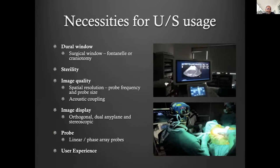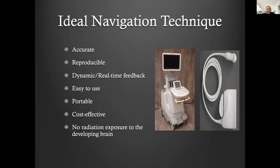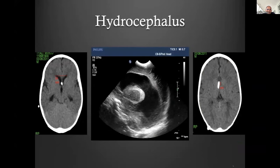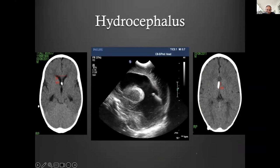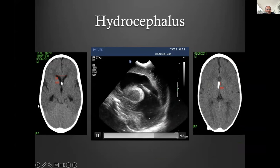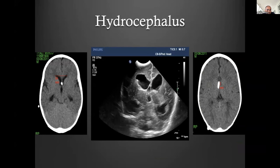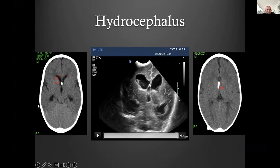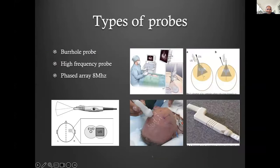Ultrasound guidance has been touted many times as an ideal navigation technique. I'll show a video of a case with fairly small ventricles. In the sagittal plane we can track catheter placement in real time. As I get to the foramen, flipping to a coronal plane revealed the catheter was quite a bit more lateral than anticipated. The benefit is you can correct it immediately in real time and know more or less what to expect on your follow-up scan.